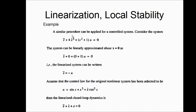A similar procedure for linearization can be applied to a controlled system as well. This system has a scalar control u — it's a controlled system. The point of interest can be taken as the origin. When linearly approximated about x equal to zero, we have x-double-dot equal to minus u. Applying the Taylor series to the states x and x-dot, x-double-dot equal to minus u is the linearized system.